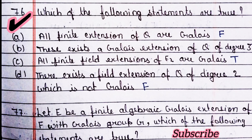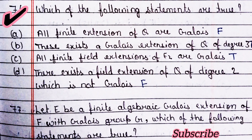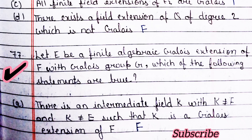Next question: which of the following statements are true? Four statements are given. Statement one: all finite extensions of Q are Galois — this is false. Statement two: there exists a Galois extension of Q of degree 3 — this is true. Statement three: all finite field extensions of F2 are Galois — this is true. Statement four: there exists a field extension of Q of degree 2 which is not Galois — this is false.